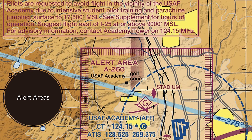Alert areas are designated to warn you that there is a ton of air traffic in a given area. This one is over the Air Force Academy, and there's a note on the chart that says: 'Pilots are requested to avoid flight in the vicinity of the Air Force Academy due to intensive student pilot training and parachute jumping, surface to 17,500 feet.' It says to see the supplement for hours of operation — you can Google A260 to find when that alert area is active. You could fly through it, but you might encounter training airplanes and skydiving, and since we're supposed to give right-of-way to airplanes, we could be putting ourselves in an unsafe position.